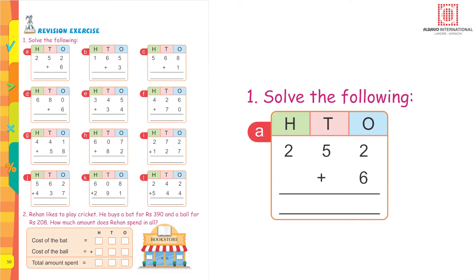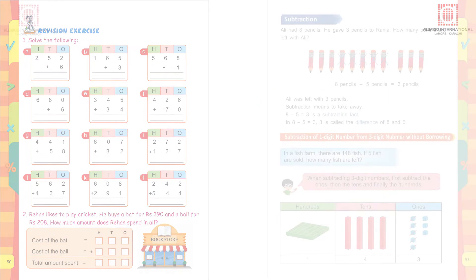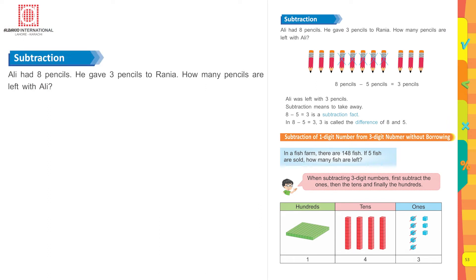Solve the following — it's a revision exercise. You know how to solve these: three-digit number with one-digit number, it is as simple as you have done earlier. Page 53: subtraction. Ali had eight pencils, he gave three pencils to Rania — how many pencils are left with Ali?